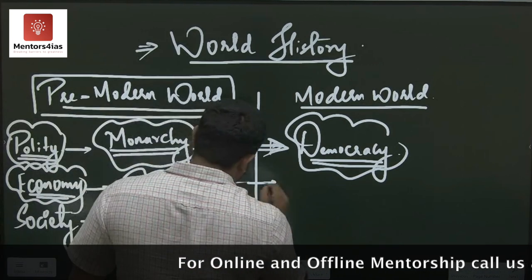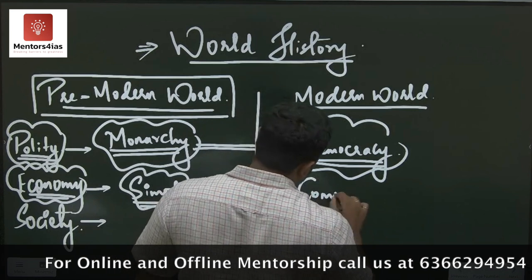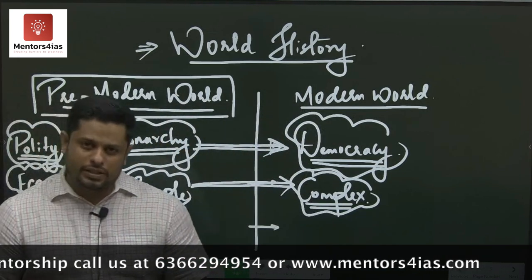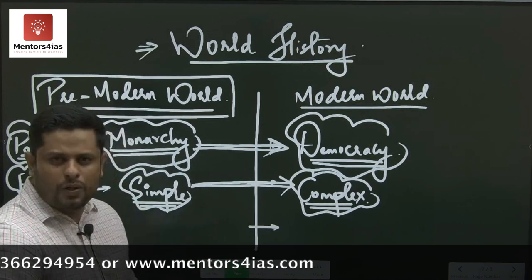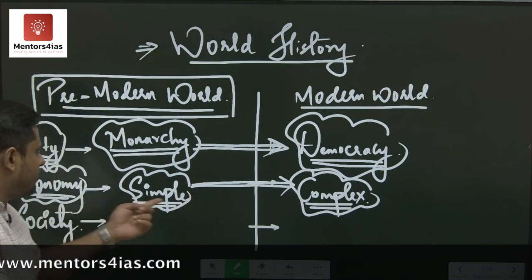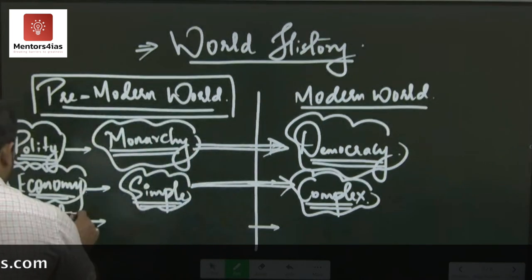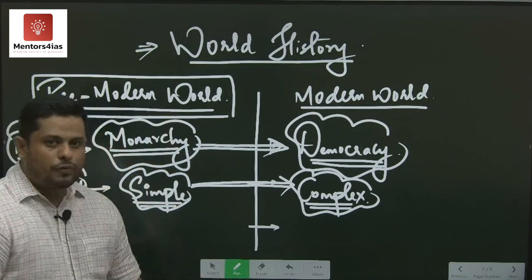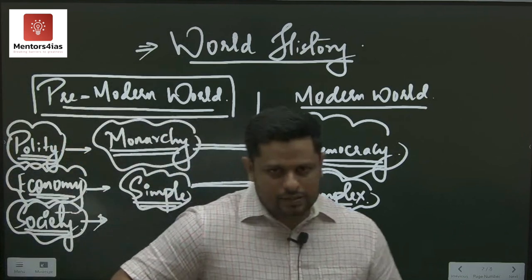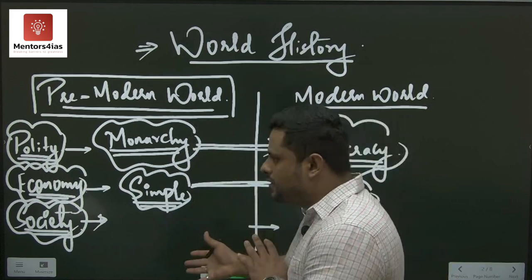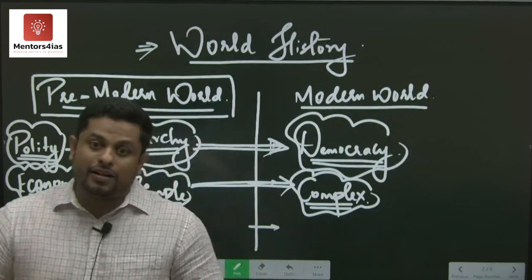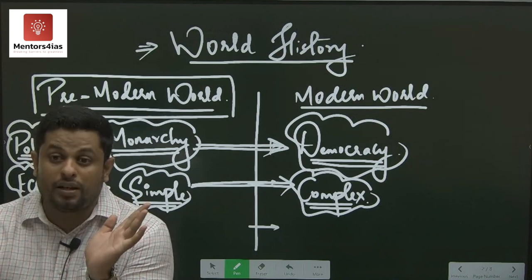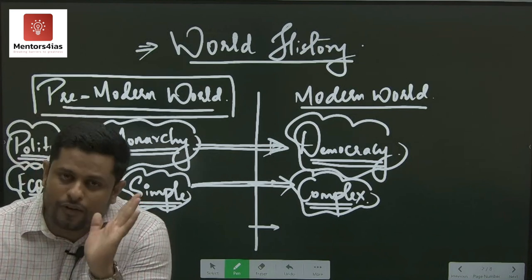Going back in time, there was a barter system, then some sort of monetization happened and monetized economies started coming into the picture. With the increase in world trade, a number of currencies started emerging. But today the economy has assumed a very complex structure, and this complex structure is due to the interests of multiple states and nations in having that share of superiority and economic strength. And as far as the society is concerned, the social structure of many nations has been constantly changing. One of the major credits for this transformation goes to technology.